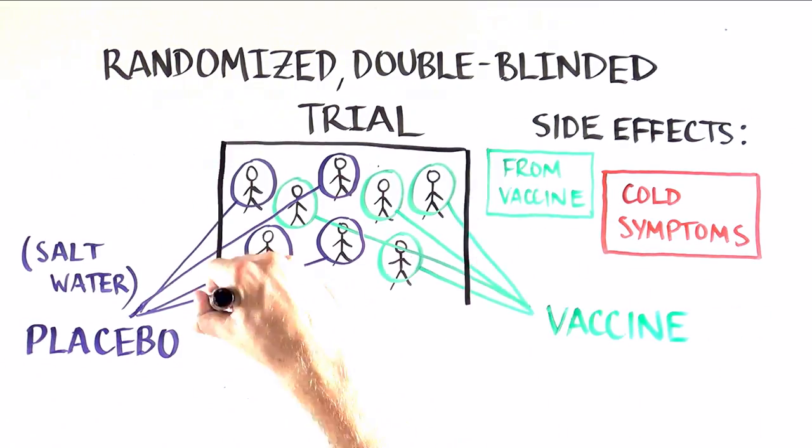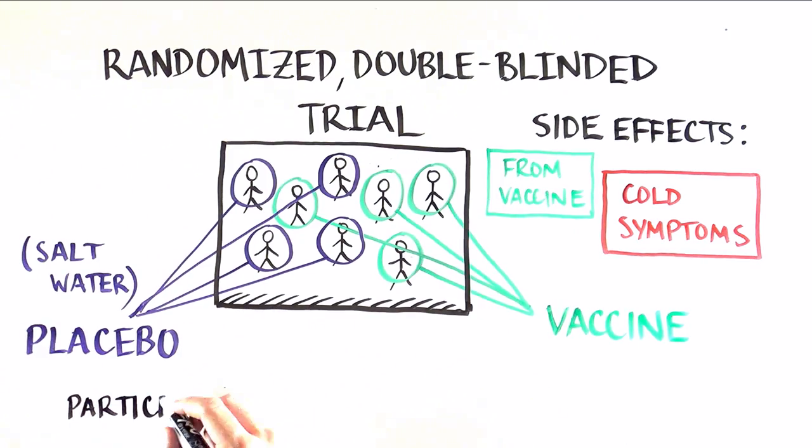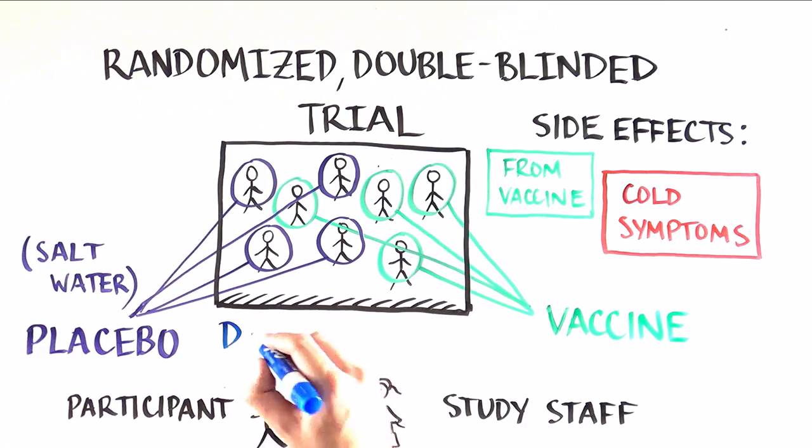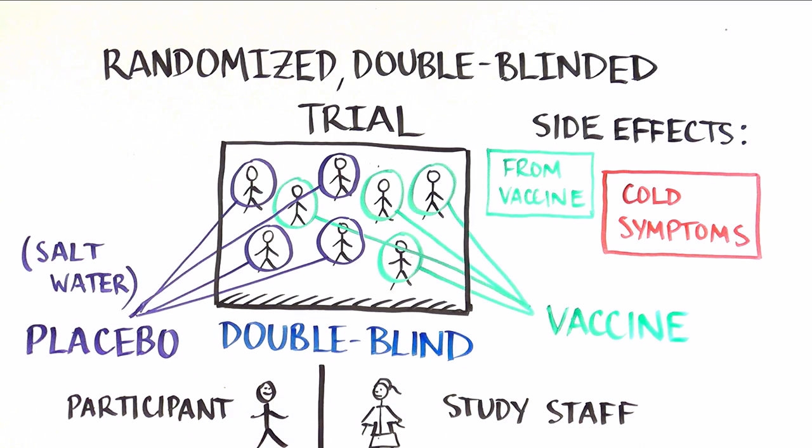And we double-blind, meaning neither the participant nor the study staff know who is getting which type of injection. That prevents both the volunteers and the staff from over- or under-reporting symptoms. We advise participants to tell us about everything that is happening to them.